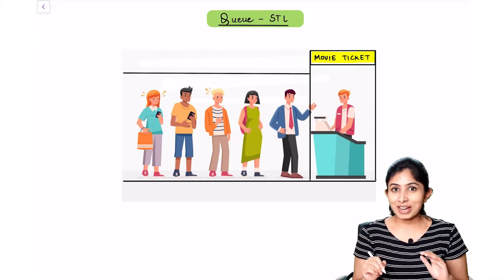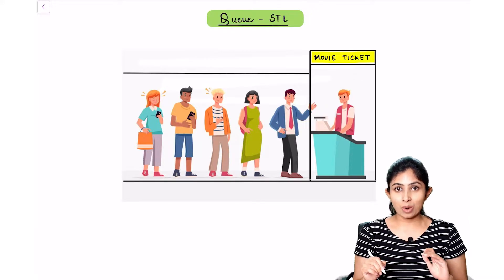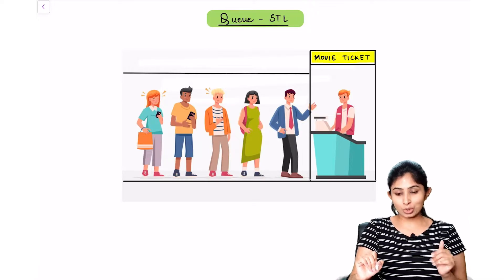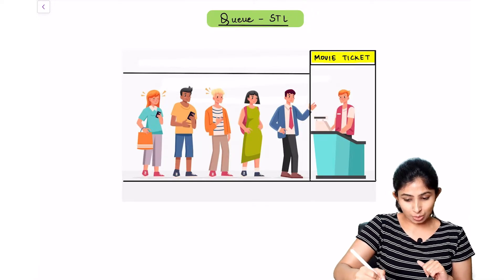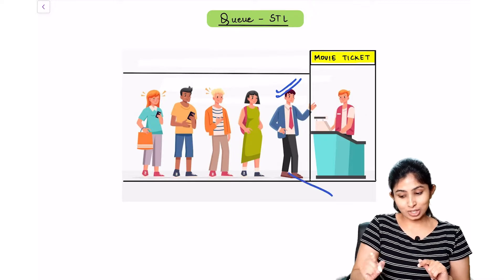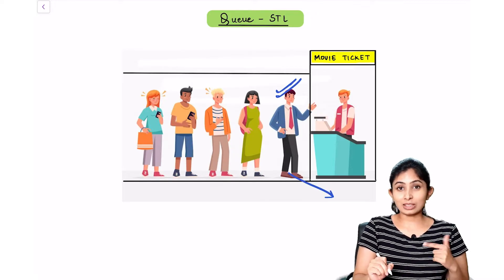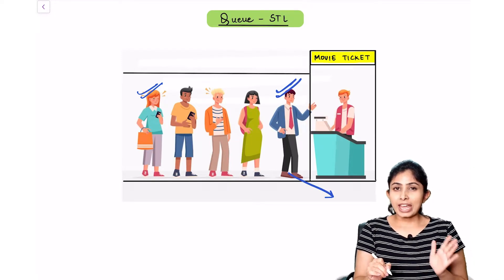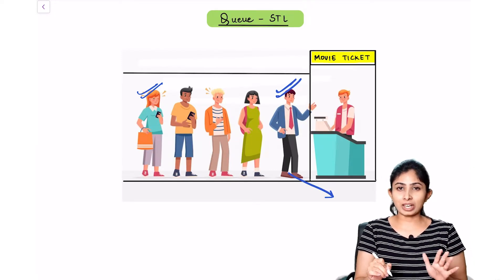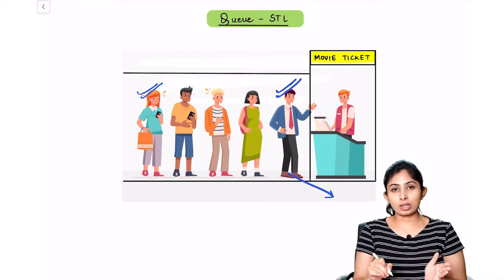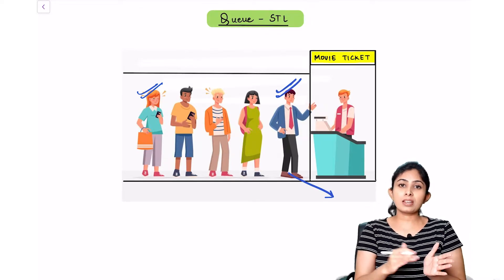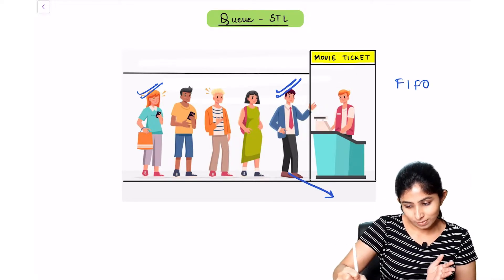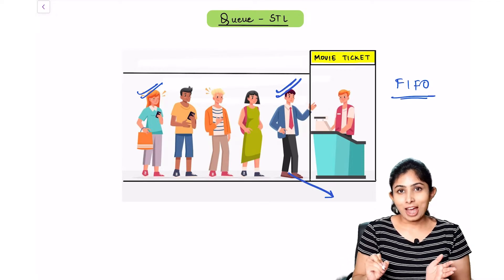Here is a classic example of a queue outside a movie ticket counter. In this queue it is important to observe that the person who enters the queue first will be the first one to be out, and the person who enters last will be the last one to be out. So every queue follows the principle of first in, first out — also called FIFO.